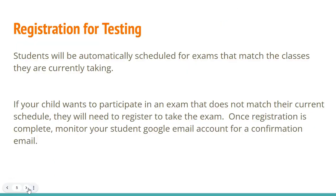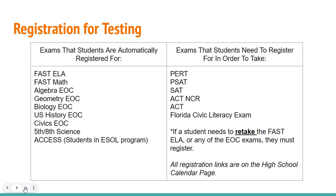Students will be automatically registered or scheduled for exams that match their current class schedule. However, if your child wants to participate in an exam that does not match their schedule, or if they need to register to retake an exam, they will need to sign up on the high school calendar website. When they click on the high school calendar, all the registration links will be there. This is a list of what exams students are automatically registered for and which ones they would need to register for.